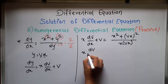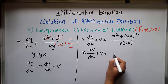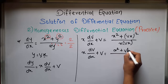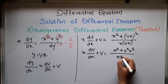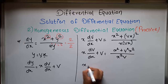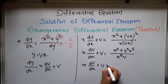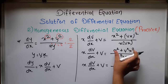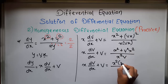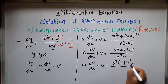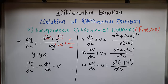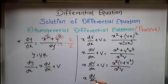The equation becomes x dv/dx plus v equal to x² plus v²x². In the denominator, it is x² times v. Taking x² common from the numerator, the equation becomes x²(1 + v²) upon x²v. The x² in the numerator and x² in the denominator cancel, so our equation becomes x dv/dx plus v equal to (1 + v²) upon v.